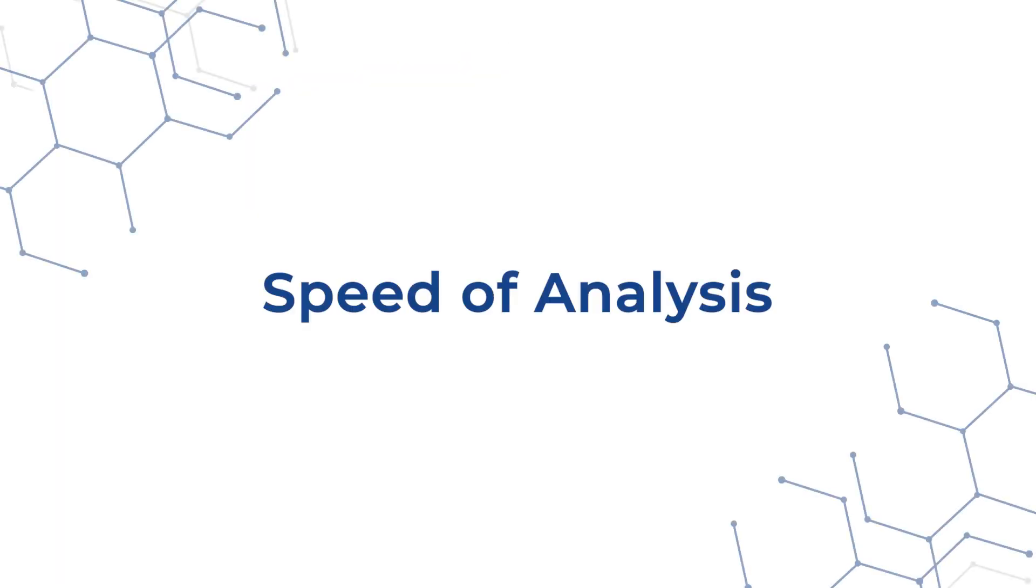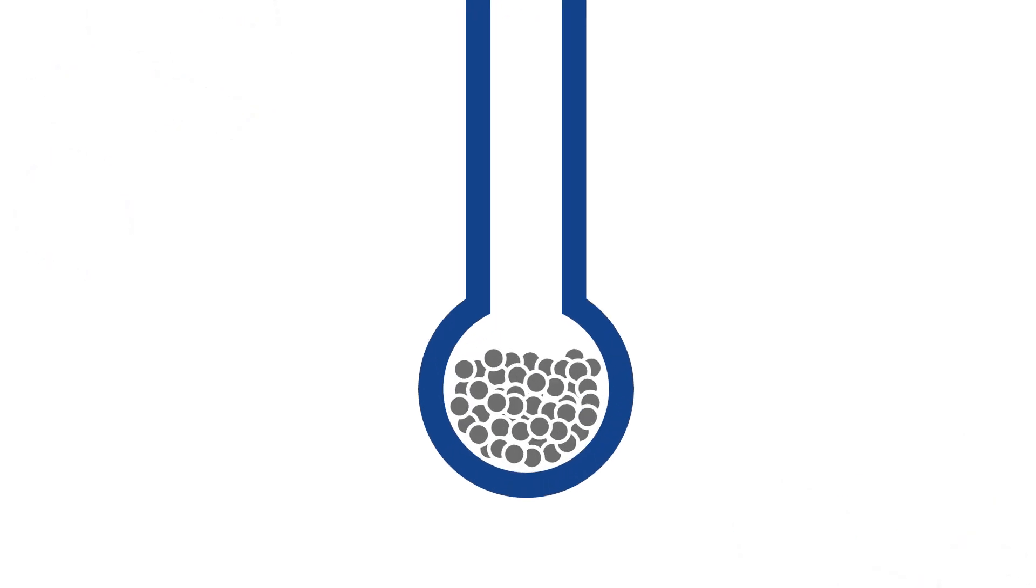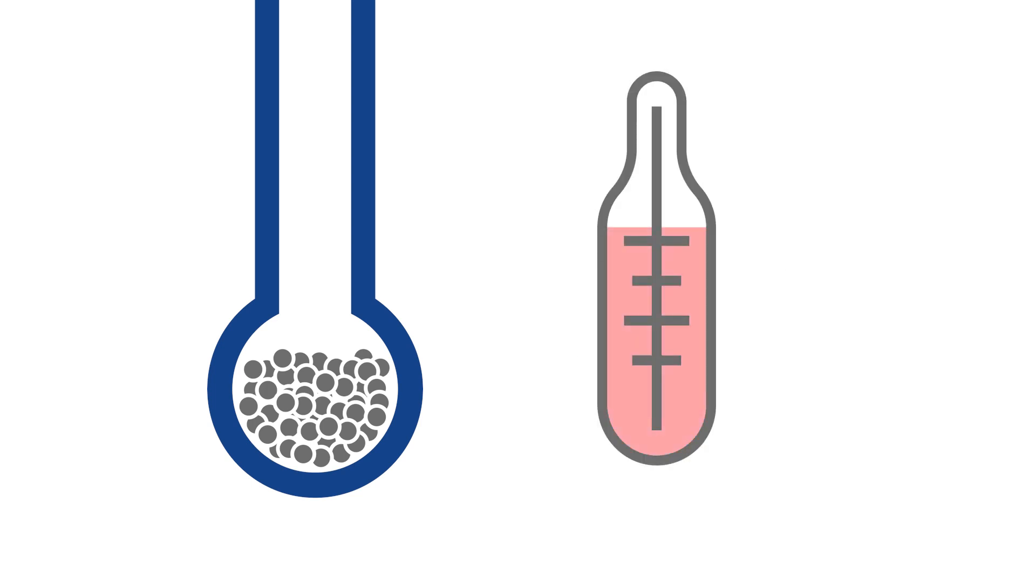These examples lead to another factor to consider, which is speed of analysis. Does the sample size affect the speed? The answer is yes. The higher the total surface area, the slower the analysis will be due to thermal equilibration having to reach first before pressure equilibration.